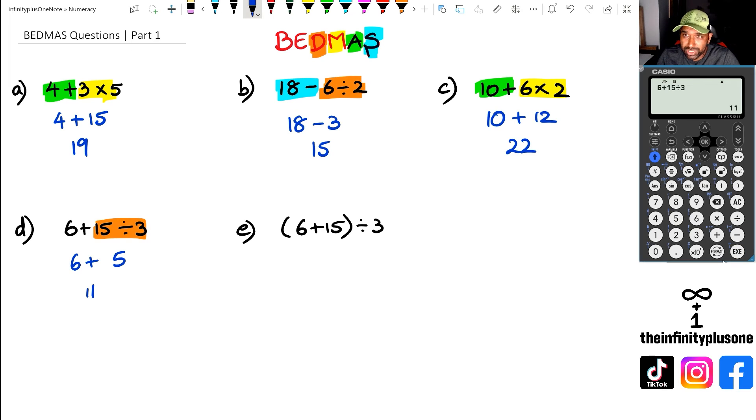However, in question E, even though the numbers are the same, we've actually got something a little bit important, which is the brackets. So we have to do the brackets first. So doing the brackets first in this case is going to be 6 plus 15, which is 21, and 21 divided by 3 is actually 7.